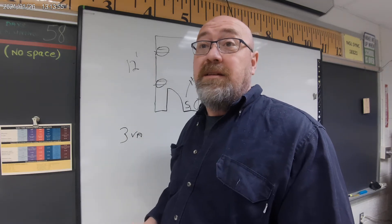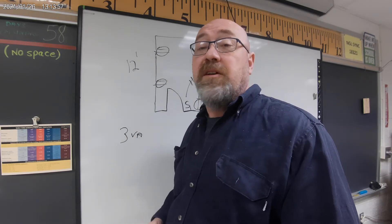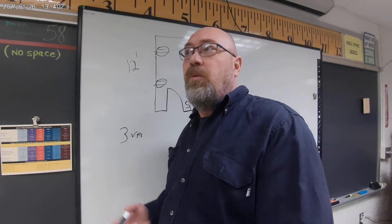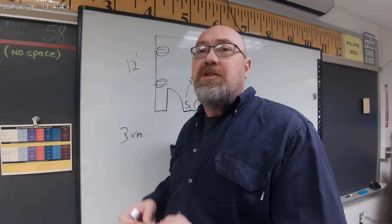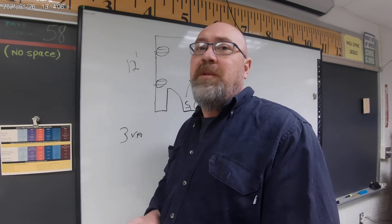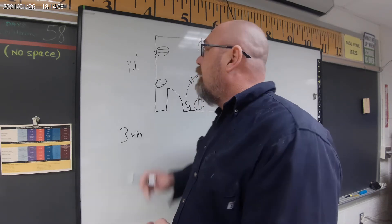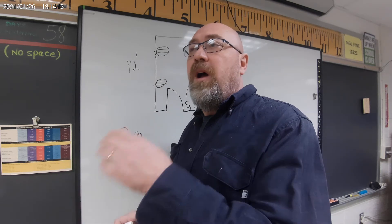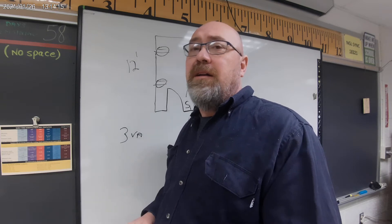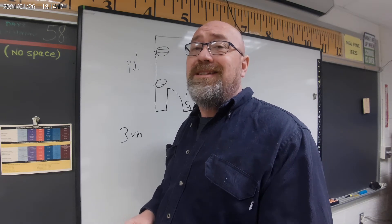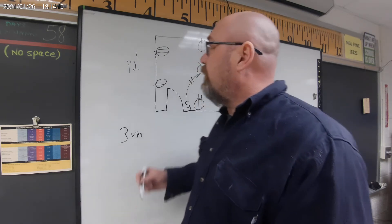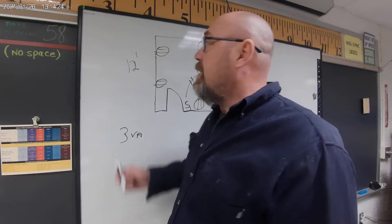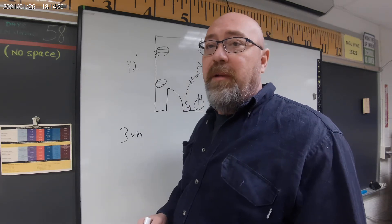When I have an outlet with nothing plugged into it, it's technically not drawing any power. Plug a lamp with a 60 watt bulb, it's drawing 60 watts. Plug a blow dryer, now it's drawing 1500 watts. It's always changing, so we need a number. They give me a calculated number of three volt amps per square foot. This bedroom is a 12 by 12 bedroom.